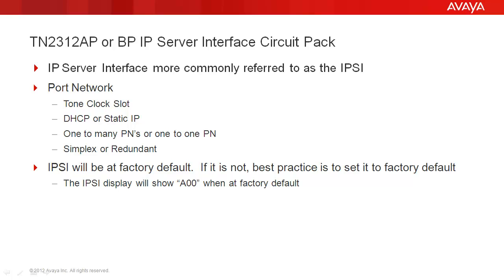IPSEEs reside in a port network. They always go in the tone clock slot and they perform the tone clock's functionality. The address can be obtained either via DHCP or static IP address. As we move forward, static IP address is the more common. You can have one IPSEE to many port networks or it can be a one-to-one relationship. A lot of that depends on whether it's a fiber-based, TDM-based, or IP-based. You can have simplex IPSEEs in a port network or it can be a redundant setup.